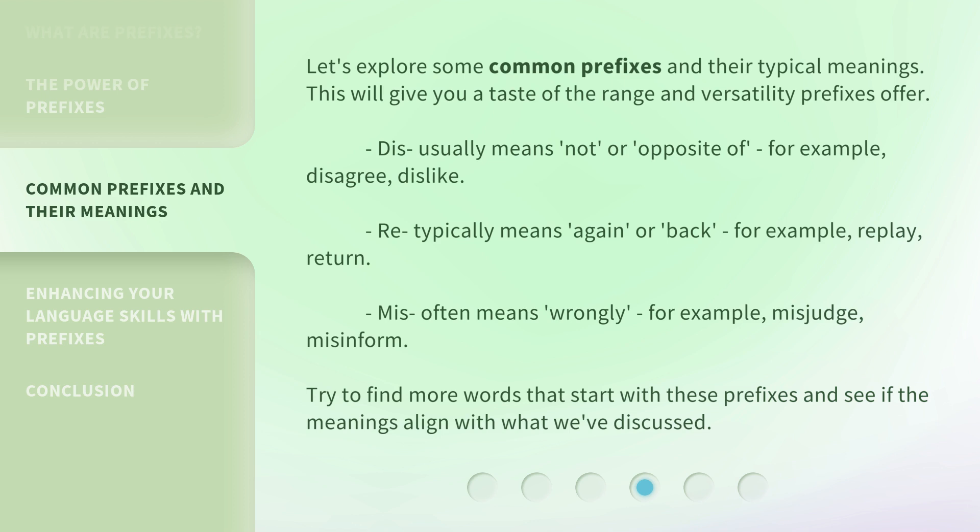"Re" typically means "again" or "back" — for example, "replay" and "return." "Mis" often means "wrongly" — for example, "misjudge" and "misinform."